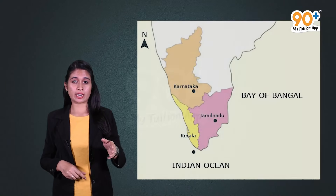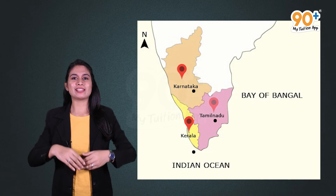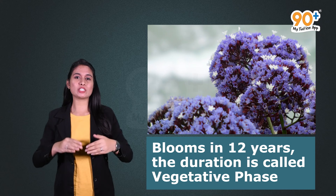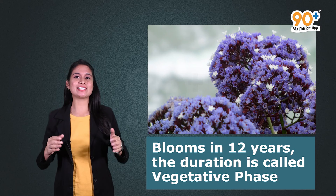Seasonal plants bloom at a specific time of the year. For example, Strobilanthus kunthiana, seen only in the hilly areas of Karnataka, Kerala, and Tamil Nadu, blooms once every 12 years. The duration of blooming once in 12 years is called the vegetative phase.